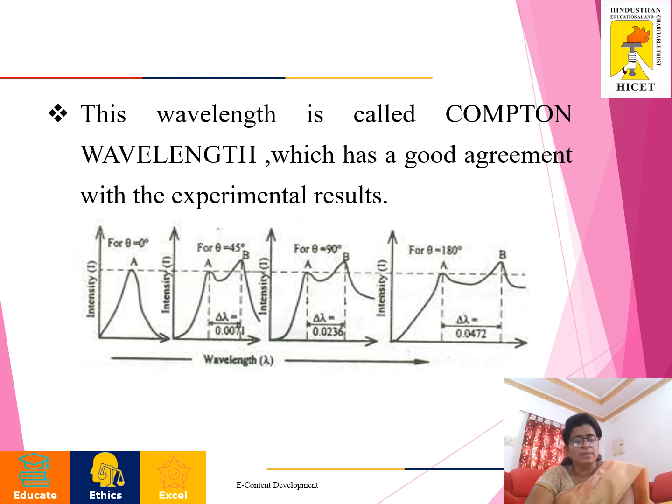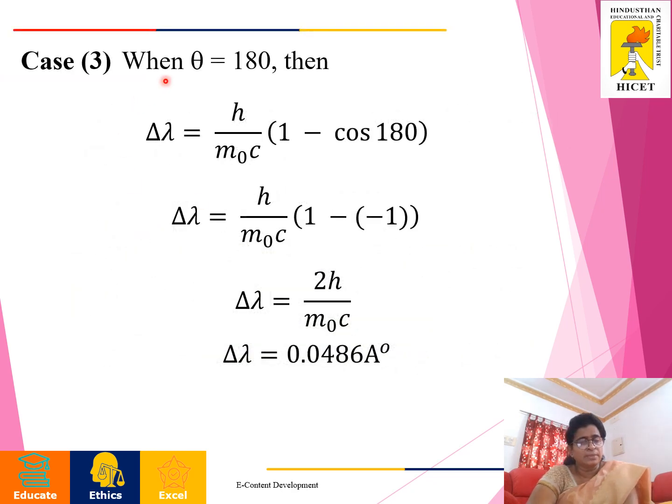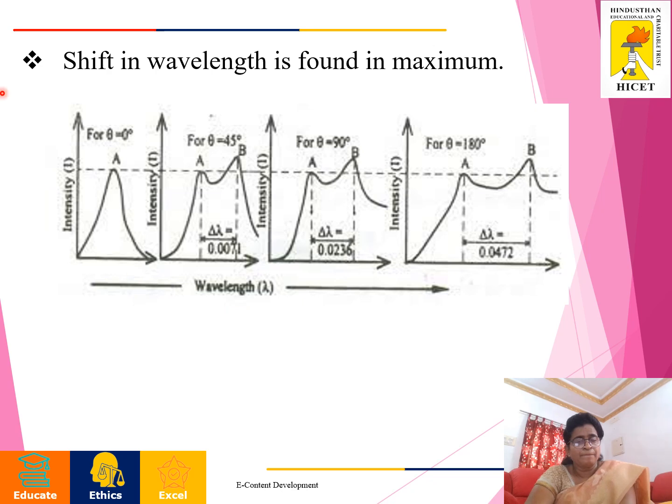Next, when theta equals 180 degrees, if you are substituting 180, cos 180 is minus 1. Therefore, 1 plus 1 is 2. 2 times h by m not c. Therefore, change in wavelength is 0.0486 angstrom unit. Here, shifting wavelength is found in maximum. From the result, we got this result.